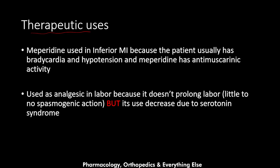Therapeutic uses: meperidine is used in inferior myocardial infarction because those patients typically have bradycardia and hypotension. Inferior MI often affects the heart conduction system, leading to bradycardia, and morphine would aggravate the bradycardia. Meperidine is preferred because its anti-muscarinic activity leads to tachycardia, which is better in these situations.